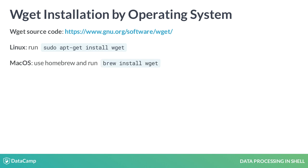For Mac users, use Homebrew by running brew install wget on the command line. For Windows users, this will not be a command line install. Rather, visit the link listed on the slide to download as part of the GNUwin32 package.